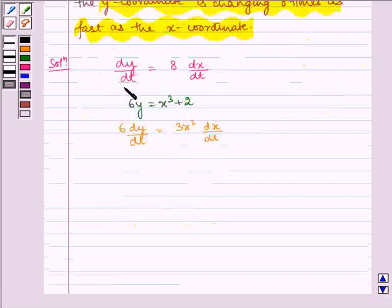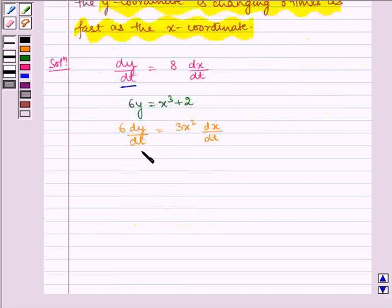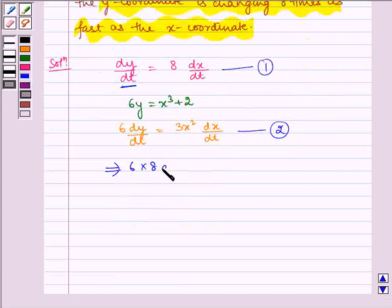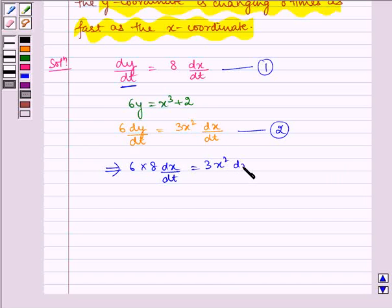Now, substituting the value of dy/dt from equation 1, we get 6 multiplied by 8 dx/dt is equal to 3x squared dx/dt.